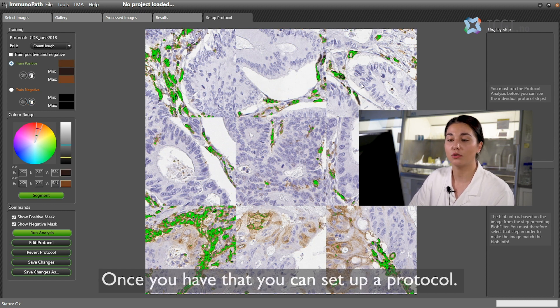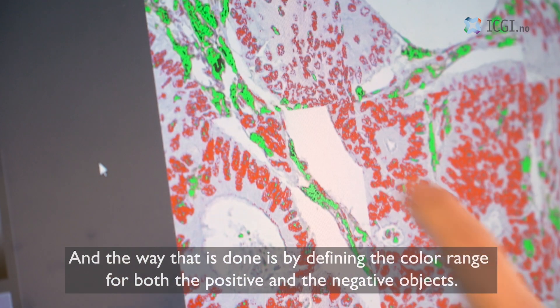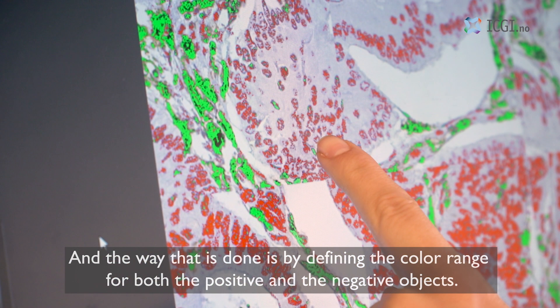Once you have that you can set up a protocol and the way that is done is by defining the color range for both the positive and the negative objects.